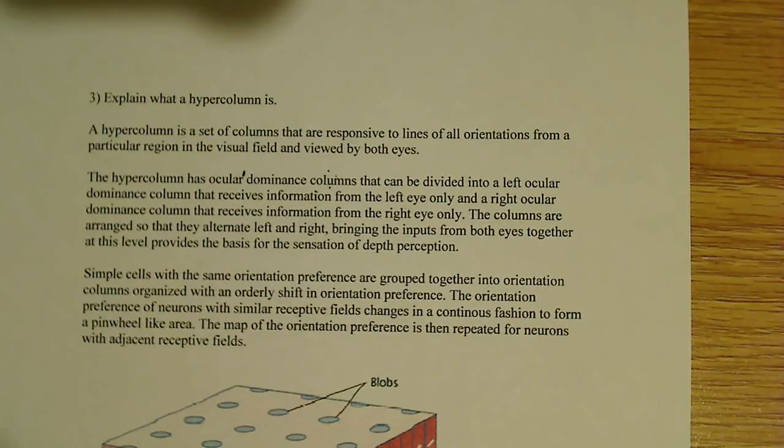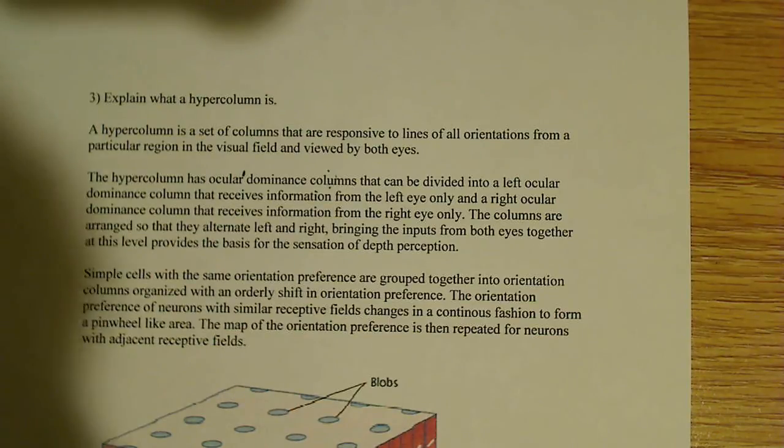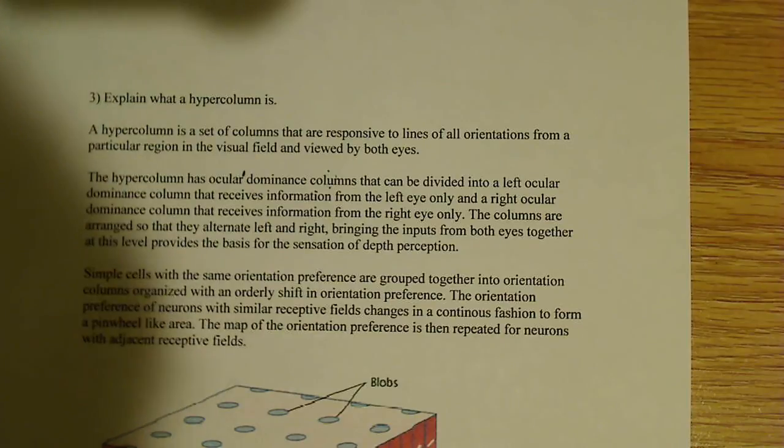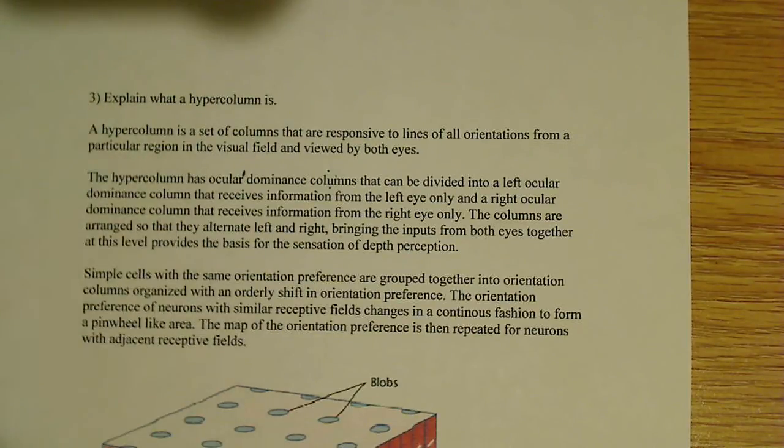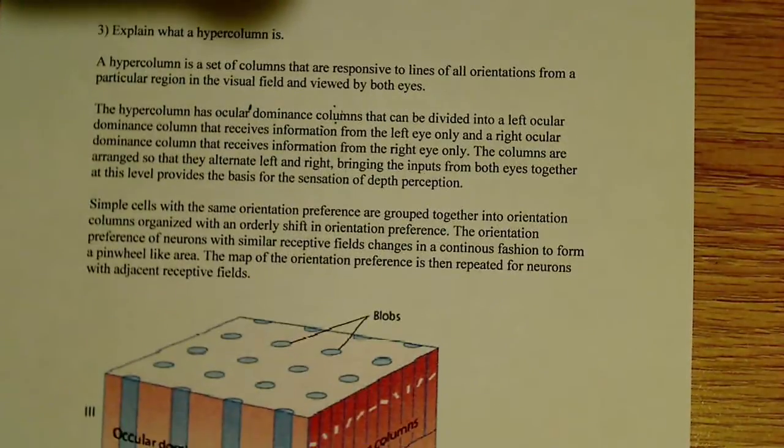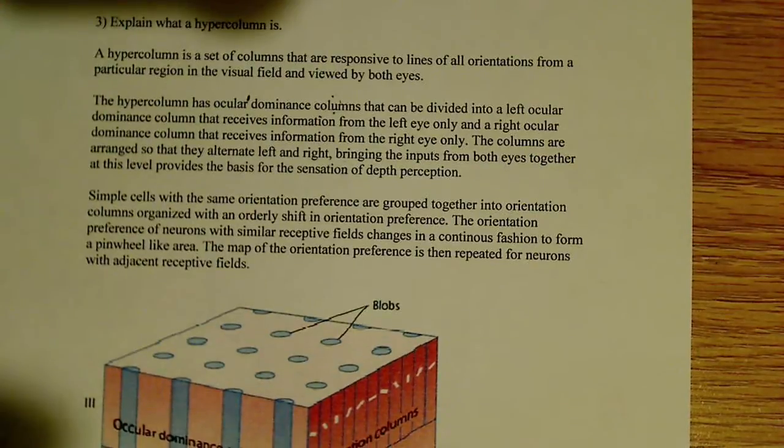So there's really the definition of what a hypercolumn is. Set of columns responsive to lines of all orientation from a particular region in the visual field and viewed by both eyes. But what does the hypercolumn consist of? A hypercolumn has ocular dominance columns,